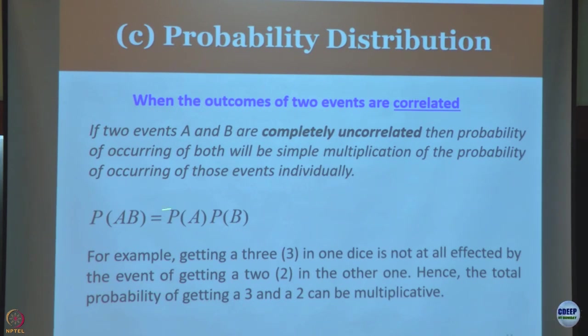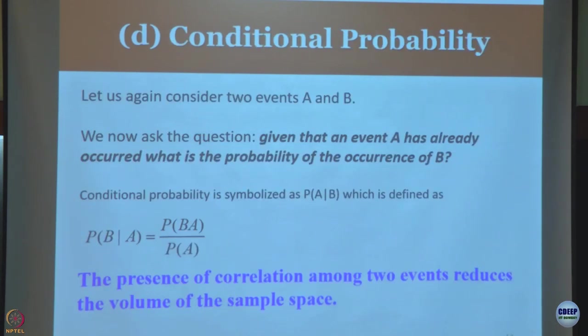This is very important because in the real world, in many cases, this independence theorem is not valid. Getting 3 on one die is not affected by getting a 2 on the other one. Hence the probability, as I said, is multiplicative.